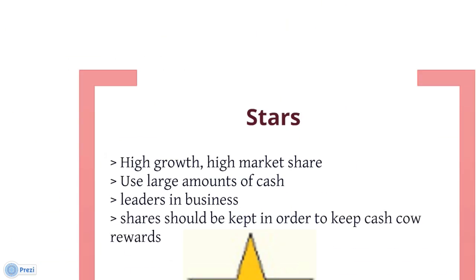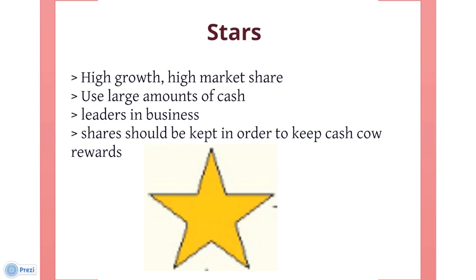Stars are units with a high market share in a fast-growing industry. The hope is that stars become the next cash cows. Sustaining the business unit's market leadership may require extra cash, but this is worthwhile if that's what it takes for the unit to remain a leader. When growth slows, if they have been able to maintain their category leadership, stars become cash cows, or else they become dogs due to low relative market share.